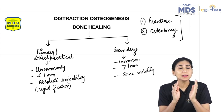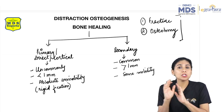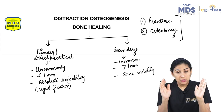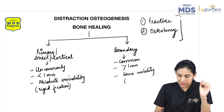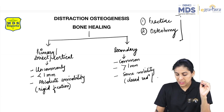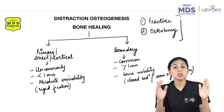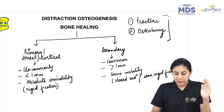If there is more mobility, it will go for a non-union or fibrous union — that is not normal bone healing. Healing happens when there is a minimum amount of mobility, which comes with closed reduction or semi-rigid fixation. These are the two gross types of bone healing.